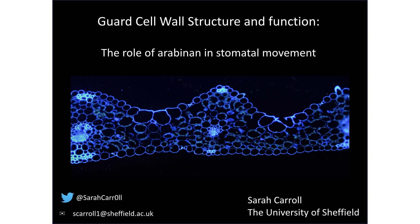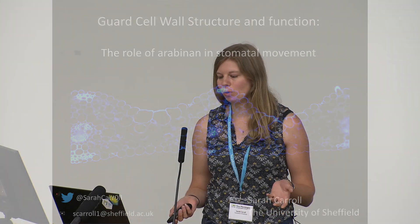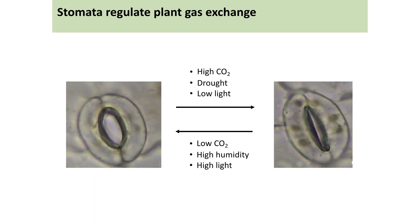I'm going to talk today about the structure of the guard cell wall and how this implements stomata function, with a particular focus on a cell wall component called arabinan. Stomata regulate plant gas exchange and are pores found on the surface of the leaf which swell and deflate in response to multiple different stimuli, opening and closing the stomatal pore.